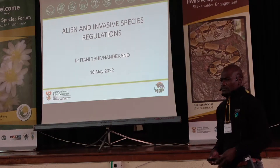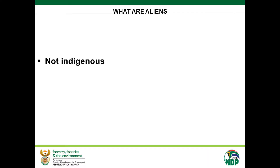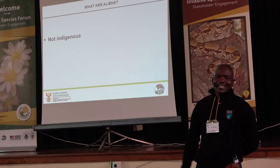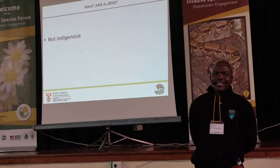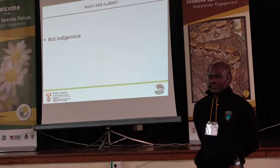Because the talk didn't really introduce much about invasive species, I thought I should start by defining what aliens are. We all know that aliens are species that are non-indigenous — any non-indigenous species is regarded as alien. But the alien and invasive species regulations talk of both alien and invasive. So alien is anything that is non-indigenous. Within alien species we have those that are beneficial and not invasive.